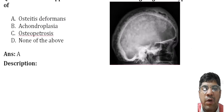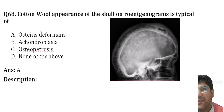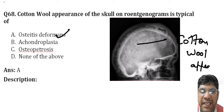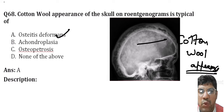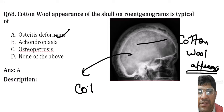The cotton wool appearance on the skull is typical of Paget's disease (osteitis deformans). This appearance is seen due to disorganized bone remodeling that leads to thickening and softening of bone, resulting in the cotton wool appearance.